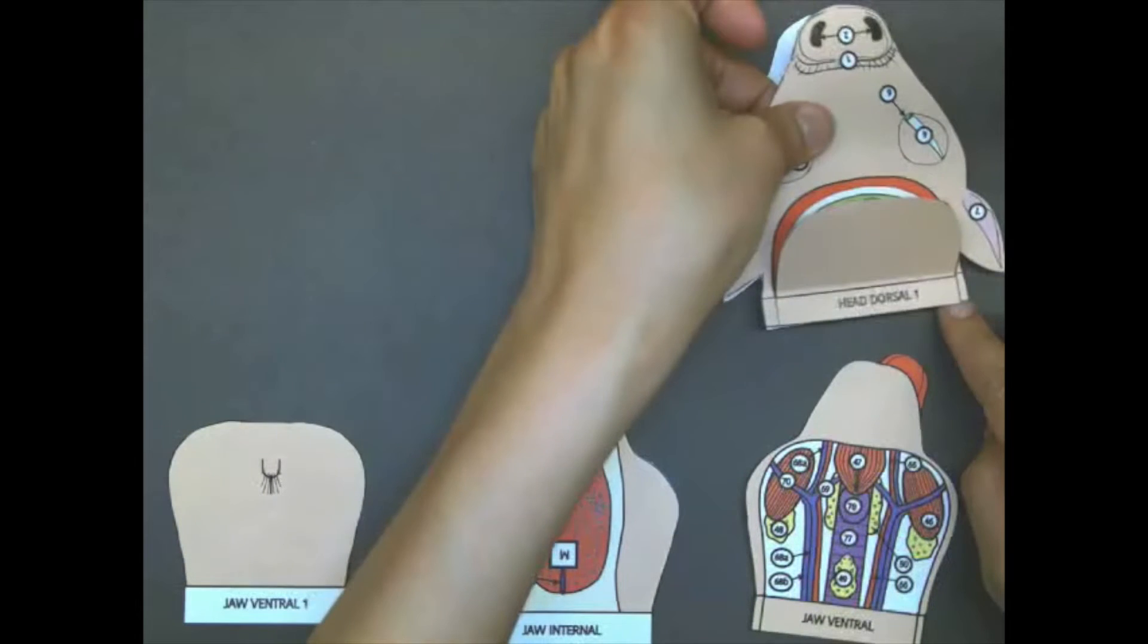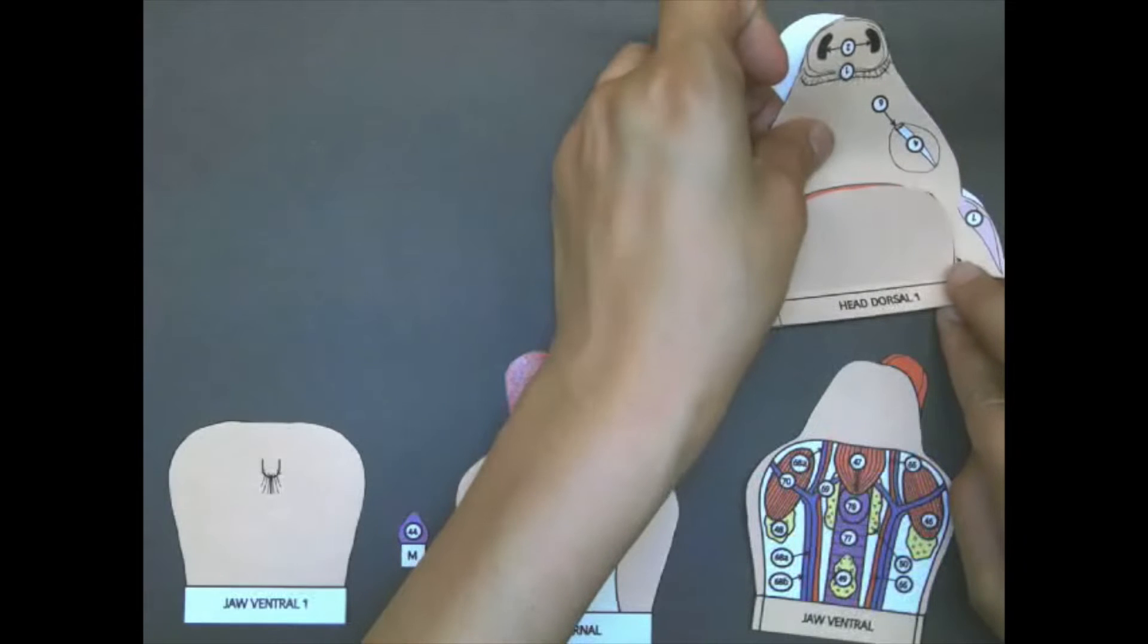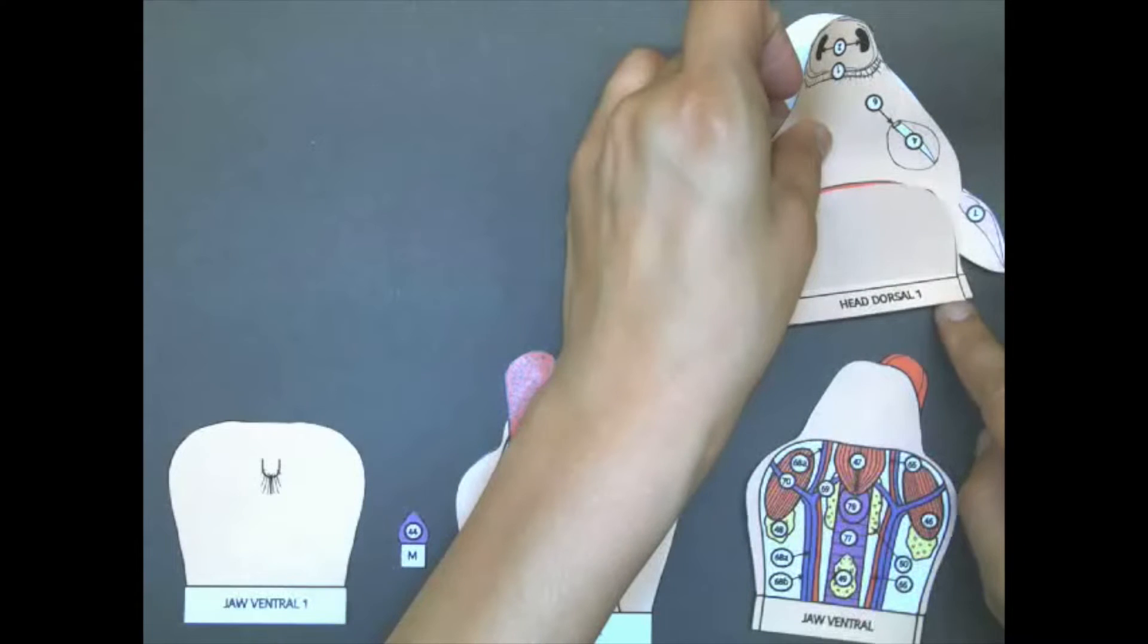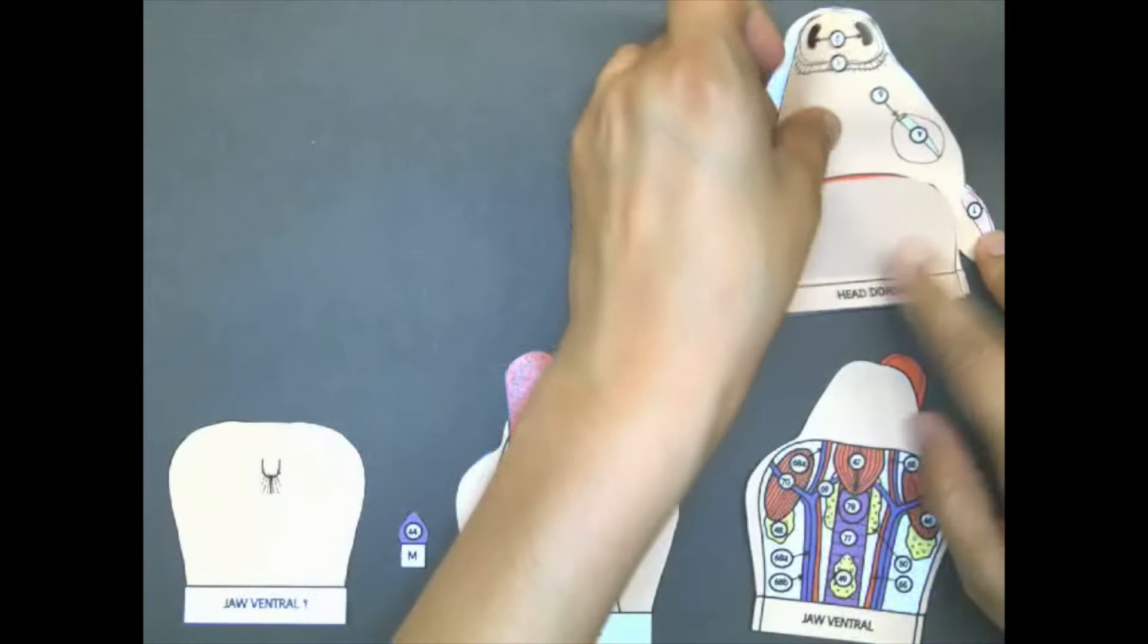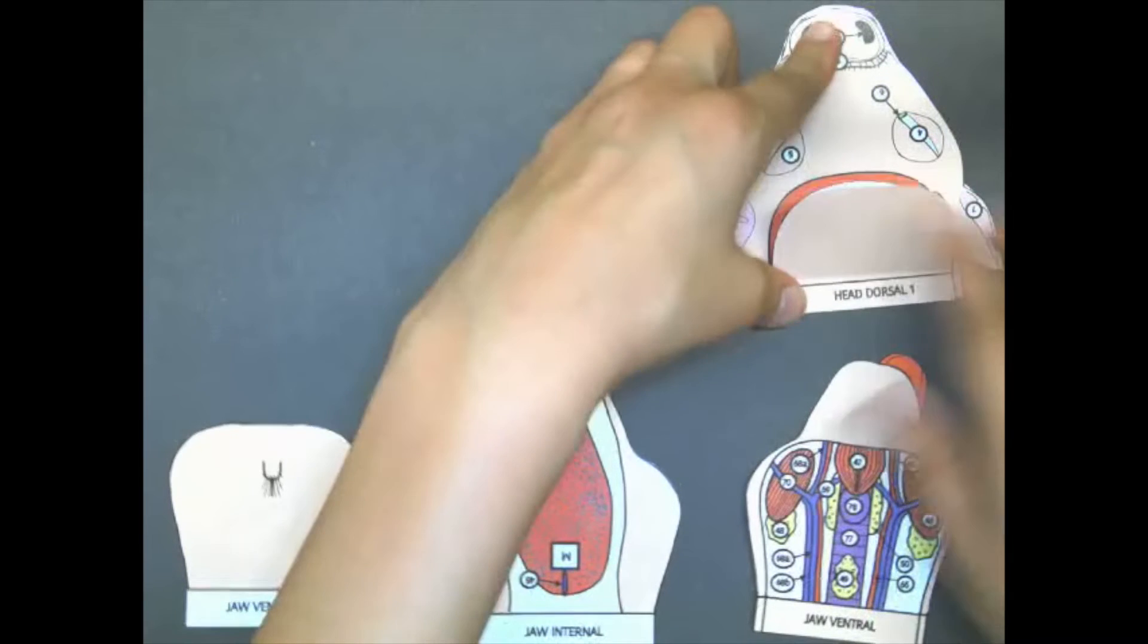You'll notice that now the top of the head has been built. On one side you have the eyes, the nose, the ears, and on the other side you have the roof of the mouth.